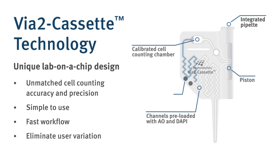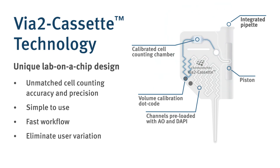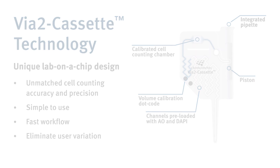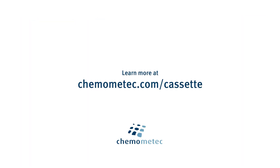The counting chamber of each VIA2 cassette is carefully volume calibrated, ensuring maximum precision. Fluorescent images of the AO and DAPI stained cells are taken and analyzed by the instrument. You've done a cell count in less than 30 seconds.